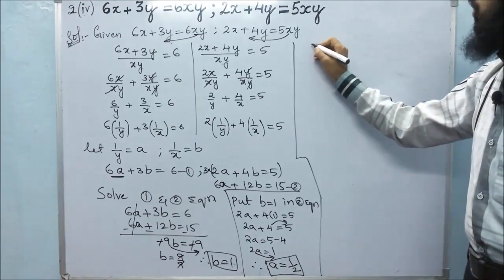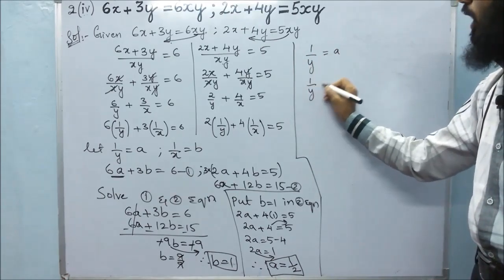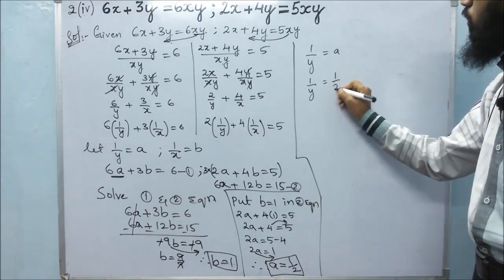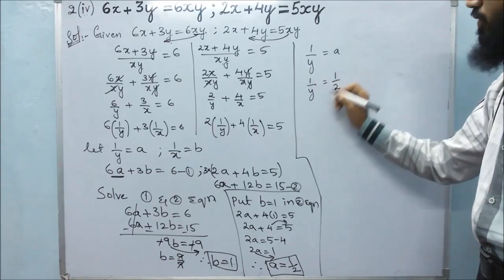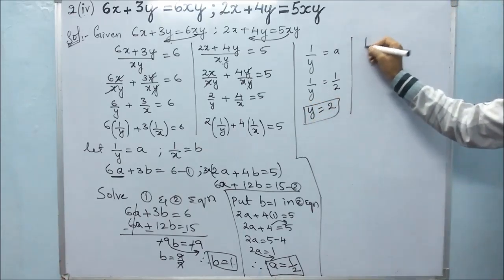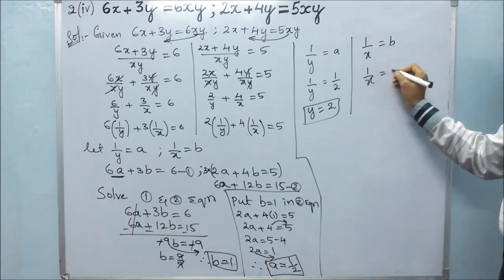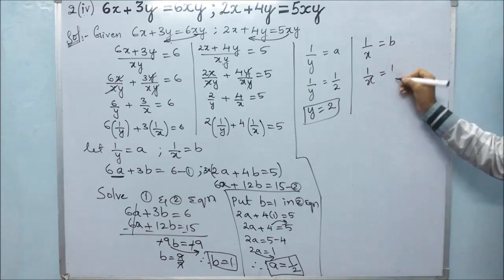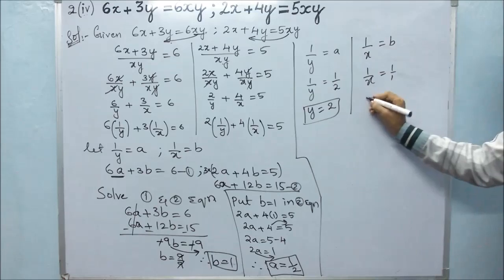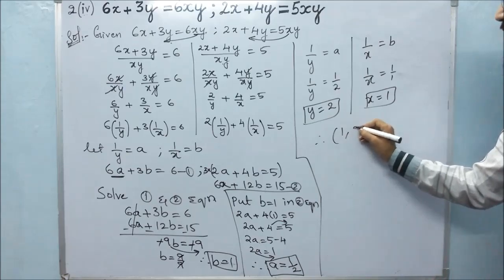Next, since 1 by y equals A, we have 1 by y equals 1 by 2. Cross multiplying gives y equals 2. Then, since 1 by x equals B, we have 1 by x equals 1. Cross multiplying gives x equals 1. Therefore the solution is x equals 1, y equals 2.